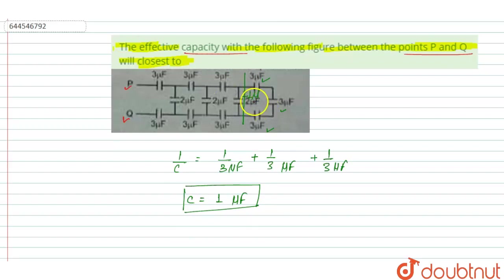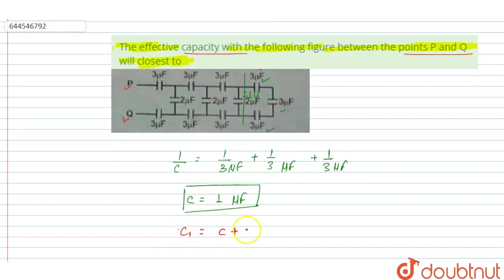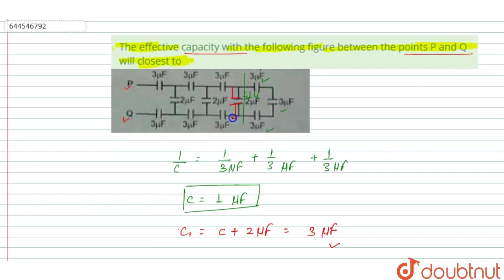Similarly, 1 micro farad and 2 micro farad are connected in parallel. In parallel, C equals C₁ + C₂, so 1 micro farad plus 2 micro farad gives C equal to 3 micro farad. That means 2 micro farad and 1 micro farad in parallel gives 3 micro farad.